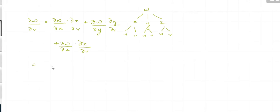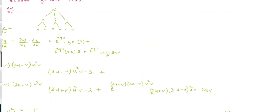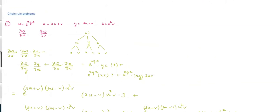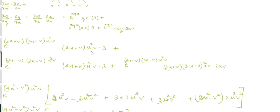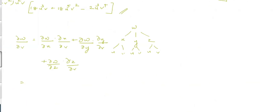∂w/∂x is e raised to xyz times yz, giving us the first term.